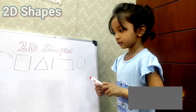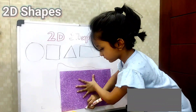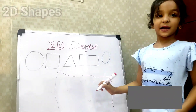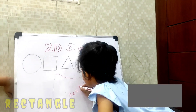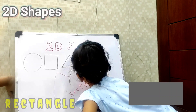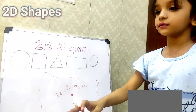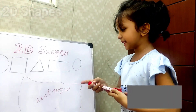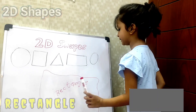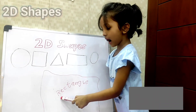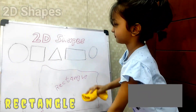Let's draw a rectangle. Spellings: R-E-C-T-A-N-G-L-E. Rectangle, Rectangle. Repeat with me: R-E-C-T-A-N-G-L-E. Rectangle, Rectangle, Rectangle.